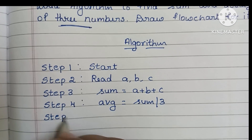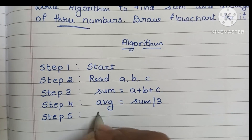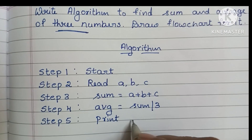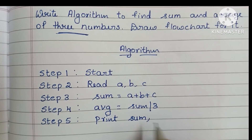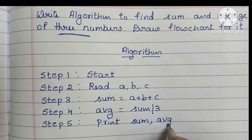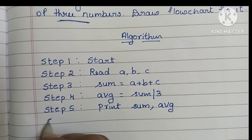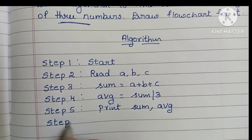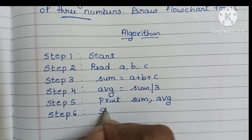In step five, we have to print the output values — that is, print sum and average. In step six, we have to stop the algorithm using the stop statement.